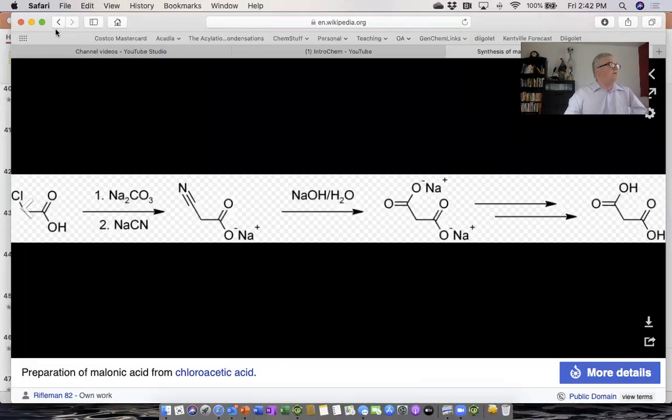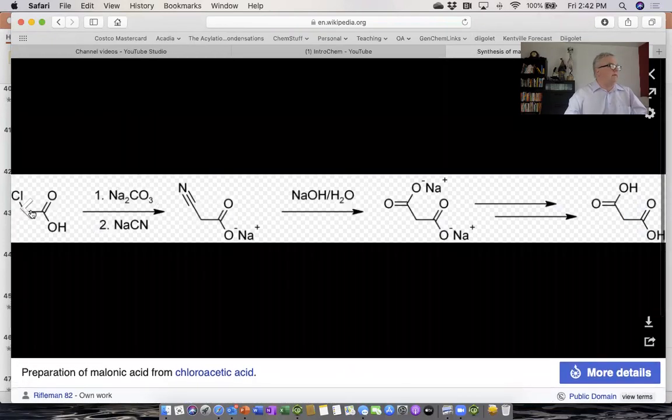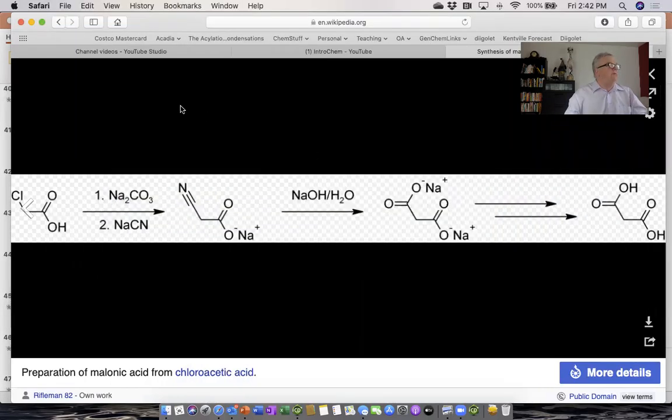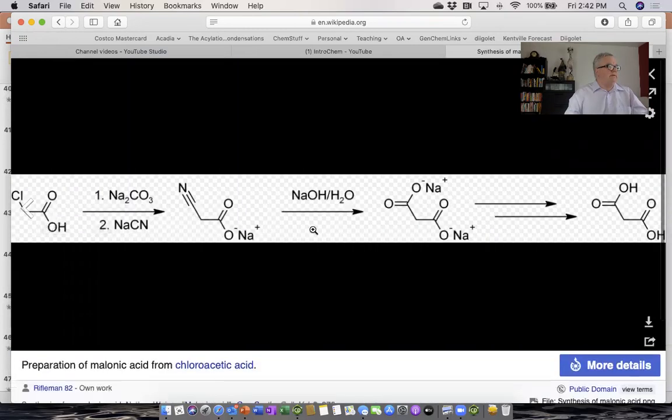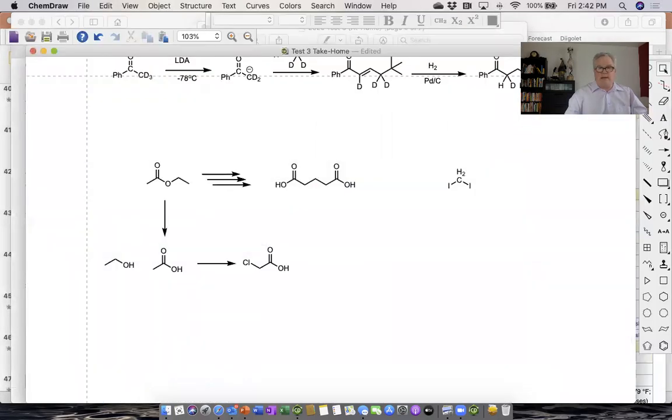Oh, there it is there. I don't know why it's doing that, but look at that. From alpha chloroacetic acid, we can make malonic acid. So we can get that right from the Google, right from Wikipedia. Even though this is a little weird on my screen right now.